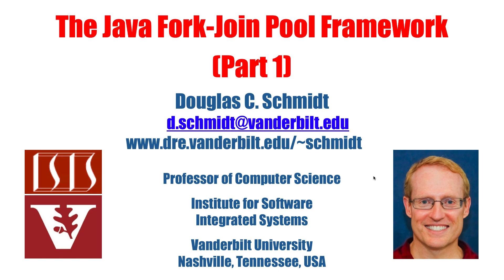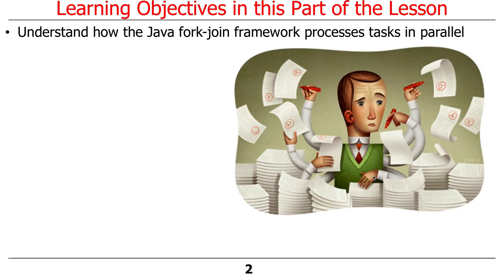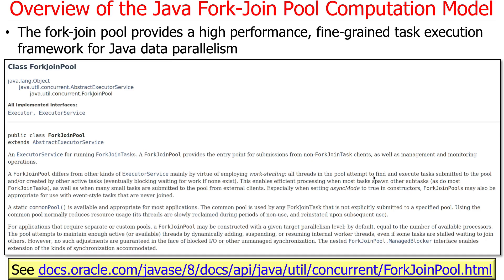Now that we've covered the overview of the different parallelism frameworks in Java, it's time to start talking specifically about the first one we're going to cover: the fork-join pool framework. What it does is arrange to process tasks in parallel. The fork-join pool is designed to provide a particular type of programming model for parallel computing — it's meant for fine-grain task execution to enable data parallelism.